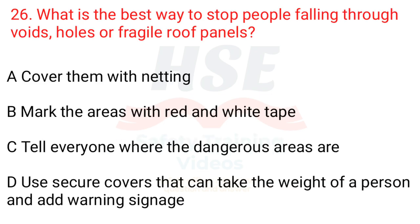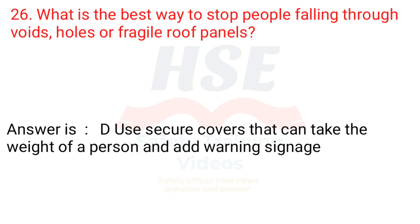Question 26: What is the best way to stop people falling through voids, holes or fragile roof panels? A. Cover them with netting. B. Mark the areas with red and white tape. C. Tell everyone where the dangerous areas are. D. Use secure covers that can take the weight of a person and add warning signage. Answer is D. Use secure covers that can take the weight of a person and add warning signage.